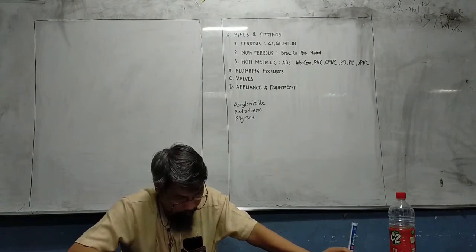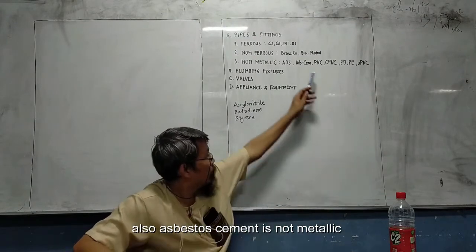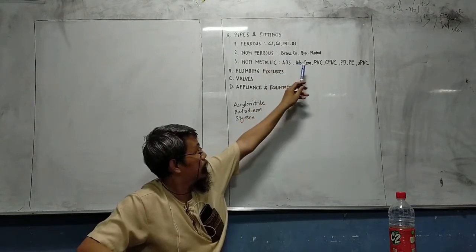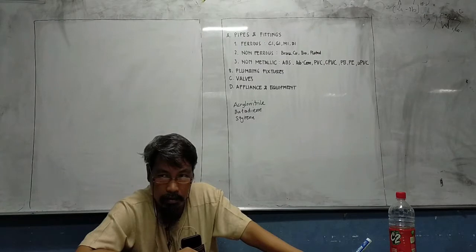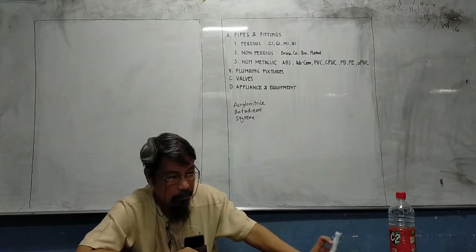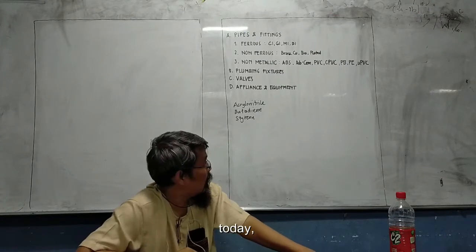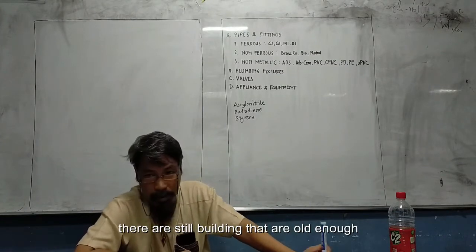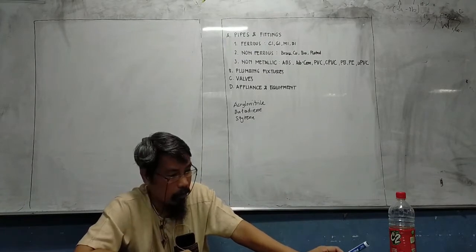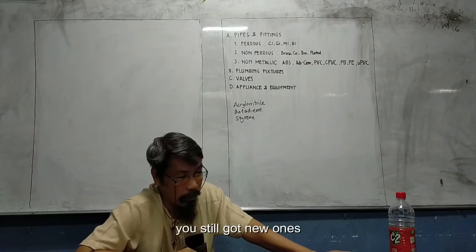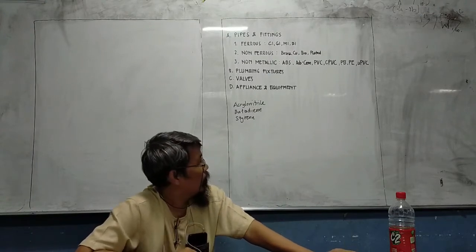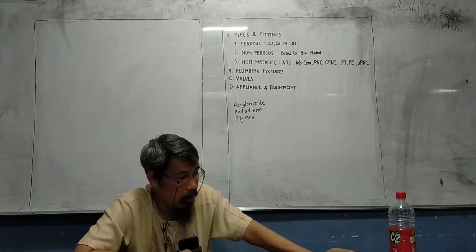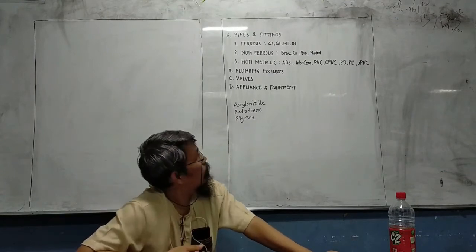Asbestos cement pipe is non-metallic. It was usually used about 50 years ago; nowadays it is almost non-existing. There are still old buildings that still have this system, but new installations will not be permitted. CPVC — chlorinated PVC — is also a type, which is chlorinated polyvinyl chloride.